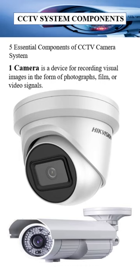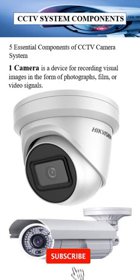5 Essential Components of CCTV Camera System. 1. Camera — a device for recording visual images in the form of photographs, film, or video signals.